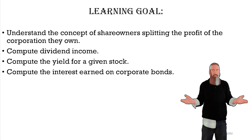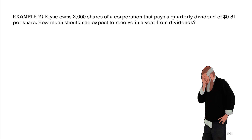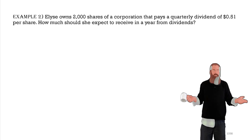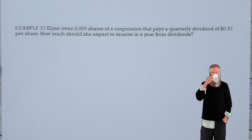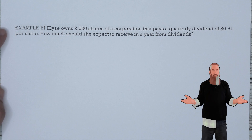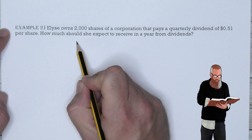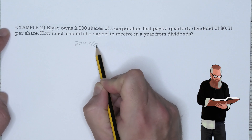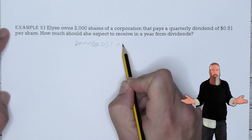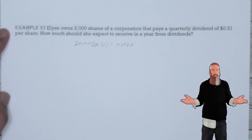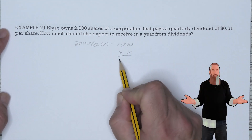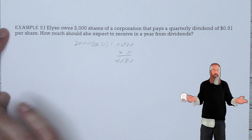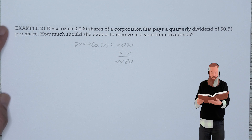Now let's compute dividend income. Elise owns 2,000 shares of a corporation that pays a quarterly dividend of $0.51 per share. How much should she expect to receive in a year from dividends? First, compute her quarterly dividend: 2,000 shares × $0.51 = $1,020. To find the annual amount, multiply by four: $1,020 × 4 = $4,080. So she should receive $4,080 in a year.